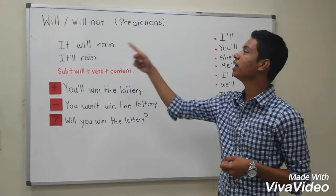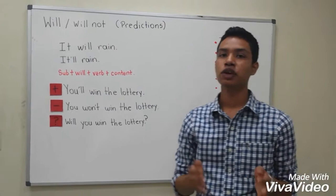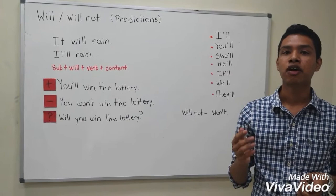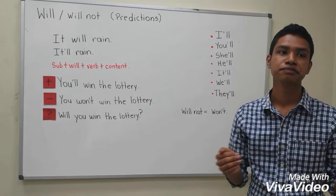My name is Marvin, and today I'm here to teach you will and will not prediction. When do we use will and will not? We often use will and will not for future prediction. But what's a prediction? A prediction is a statement of what will happen in the future. And today I'm going to give you some examples about this.